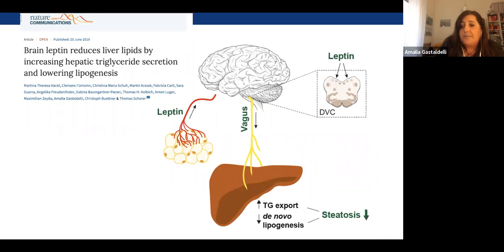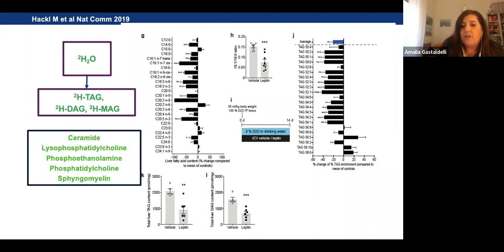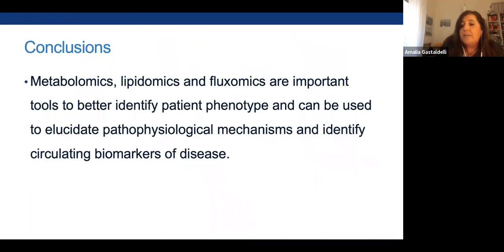We have also done studies in rodents using deuterated water to look at the effect of intracerebroventricular leptin on DAG export and de novo lipogenesis. We found that leptin increased DAG export and decreased de novo lipogenesis — all triglycerides had a much lower deuterium incorporation, showing a decrease in de novo lipogenesis compared to vehicle controls.